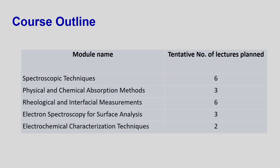What is the course outline? We have divided it into five modules. The first is spectroscopic techniques, which is a major component and consists of approximately six lectures. The second is physical and chemical adsorption methods, which will be used to obtain surface phenomena information. The third is rheological and interfacial measurements — rheological refers to the ability of a material to flow, and we will measure rheological properties and interfacial properties between two liquids or a liquid and solid.